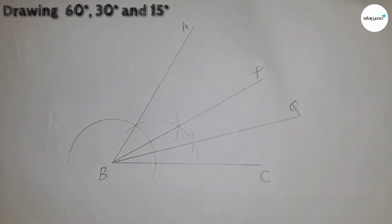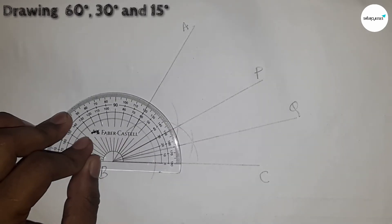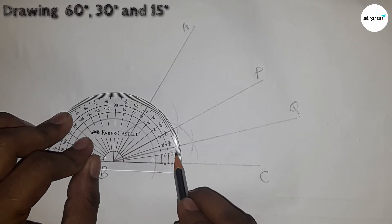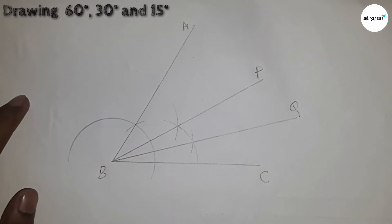Now this is Q point. Now I am going to check whether it is 15 or not. It is perfectly 15.